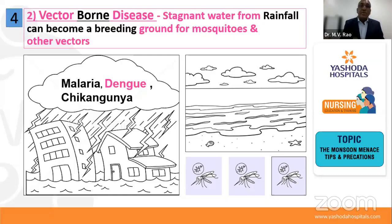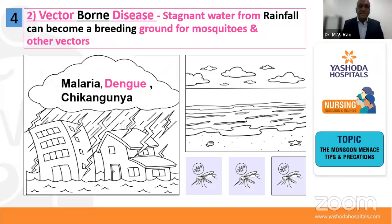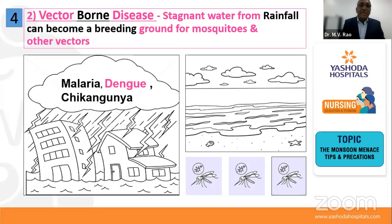If you keep your surroundings clean within about 100 meters, mosquitoes cannot reach you. They bite during the daytime, so ensure you cover your hands and feet with clothing. Children should have socks when going to school and wear long-sleeve shirts to prevent mosquito bites. Also use mosquito nets at home and cover water tanks. We also see malaria and chikungunya in this season. Whenever you get fever during this season, don't self-medicate with antibiotics — get proper investigations done and seek treatment from a qualified doctor.